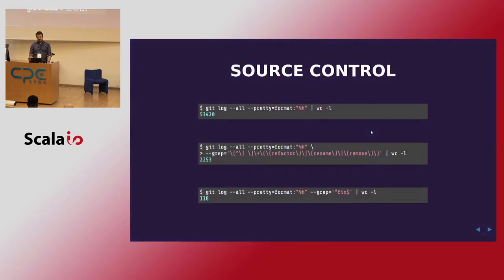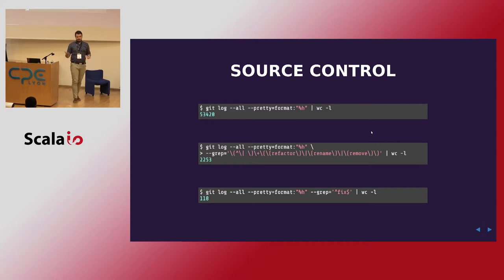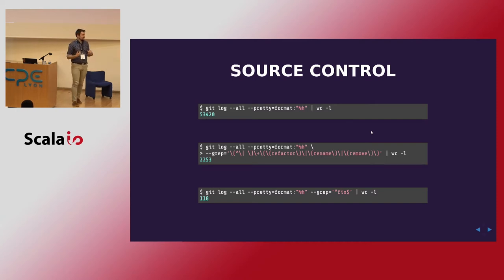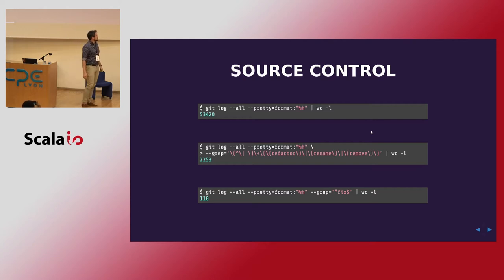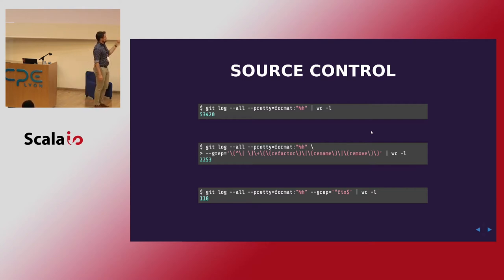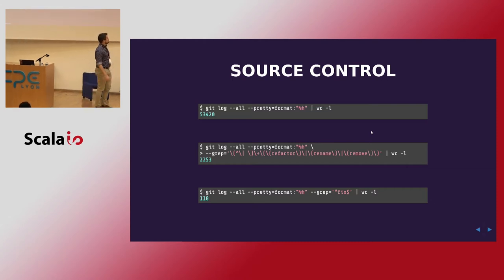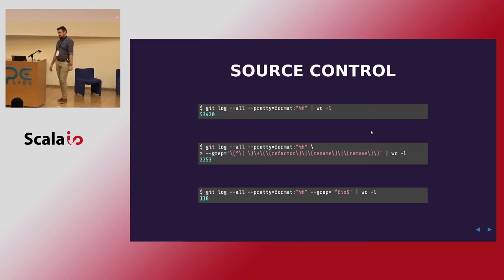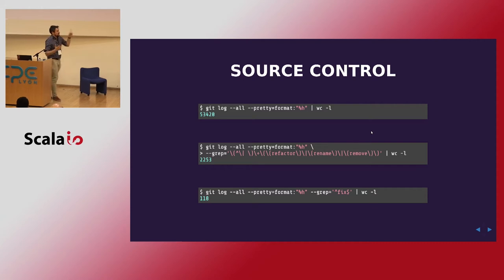How can we learn about and read the code? Source control comes to mind first, but the problem is it's a great tool for organizing and versioning code. We have commit messages we can use, but most commit messages are not so good. For example, in my colleague's project with roughly 50,000 commits, about 2,000 are basically just 'refactor', 'rename', 'remove' — and there were 118 commits where the whole message is just 'fix'.